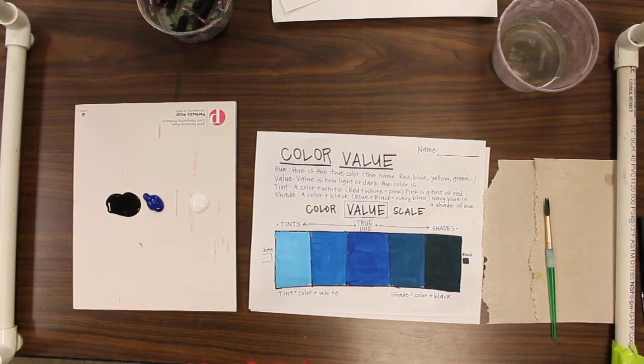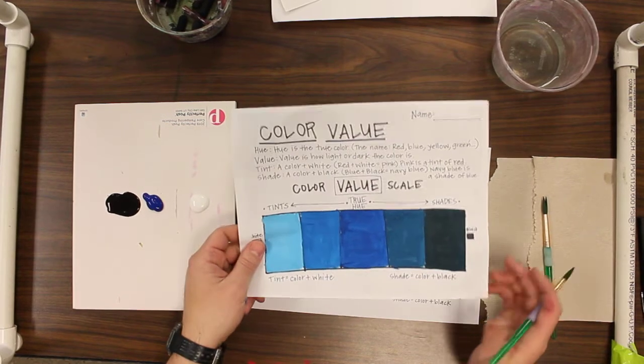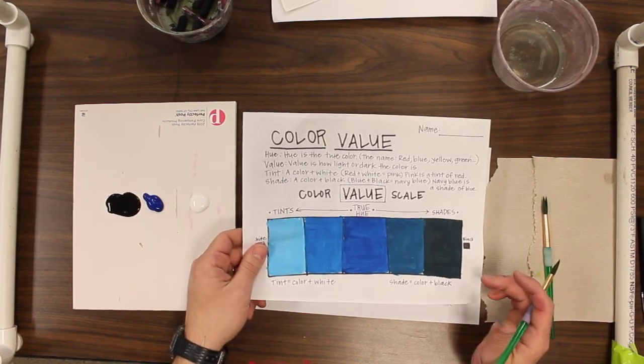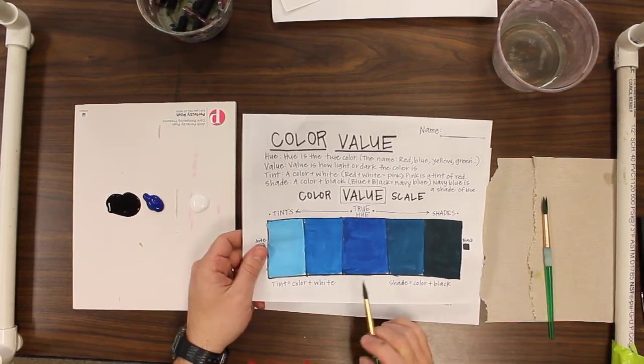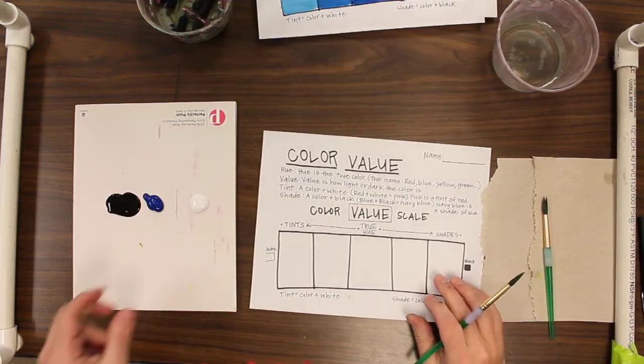All right, today I'm going to show you how to make some color value, and we're going to be working with this sheet here today. I want you to start off with one color plus black and white, so we're going to try to make the different shades of one color.